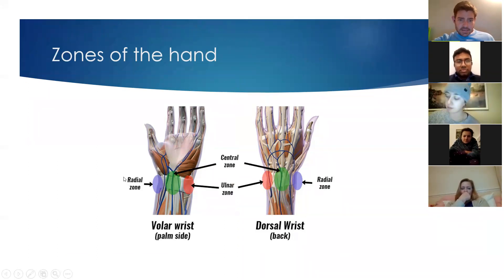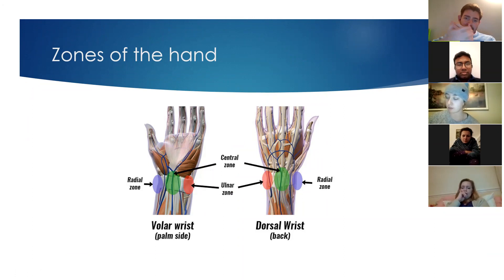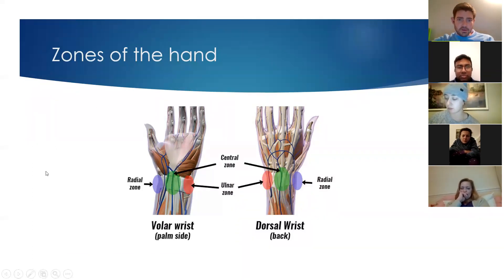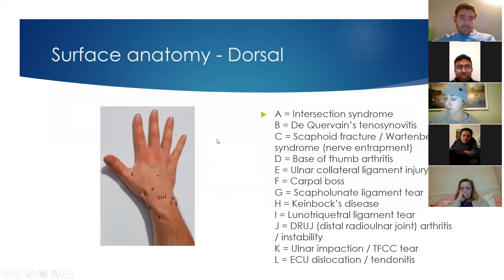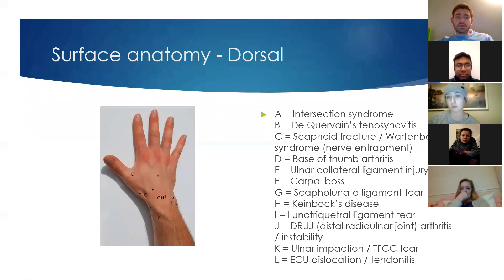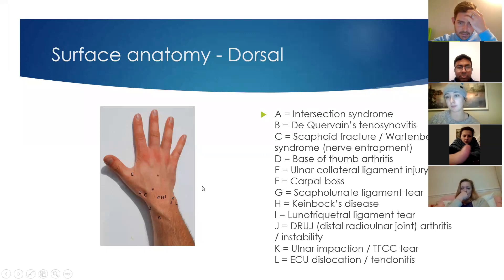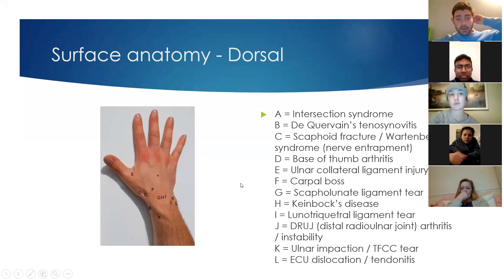Basically they break it up into the volar side, which is the palm side, or the dorsal, the back end of the wrist, and then radial, central, and ulnar sides, so just that we know which side we're talking about. The surface anatomy is obviously really, really important and gives a good indication as to what might be going on and what is causing the pain.